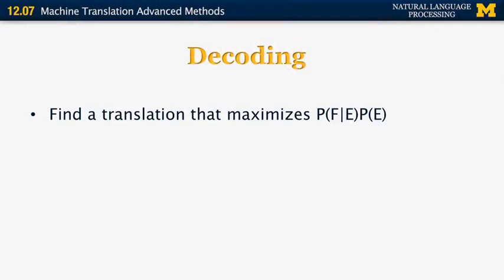So the decoding process essentially is to find, of all the candidate translations, the one that maximizes the probability of f given e times p of e. We have the values of those probabilities, but now we need to find a translation that maximizes this expression. So unfortunately, even for a simple model like IBM Model 1, this is an NP-complete problem. So the longer the sentence, the more difficult it is to get the best translation.